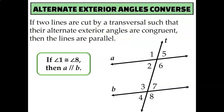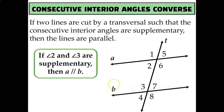The alternate exterior angles converse tells us that if you can show a pair of alternate exterior angles that are congruent, then the lines are parallel. For example, if angle 1 and angle 8 were congruent, then line A would be parallel to line B. And the consecutive interior angles converse tells us that if you have consecutive interior angles that are supplementary, then the lines are parallel.